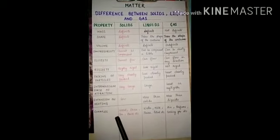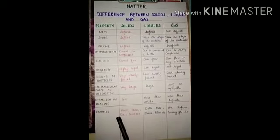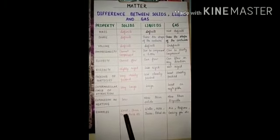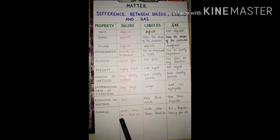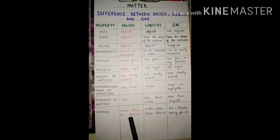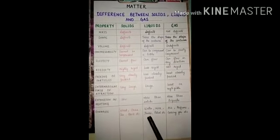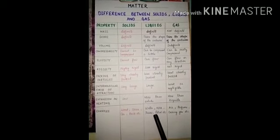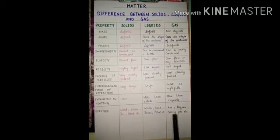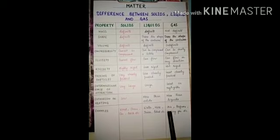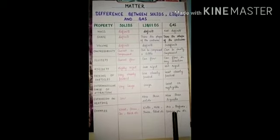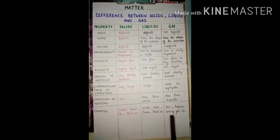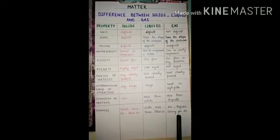Examples of solids, as we all know, are wood, chair, car, and brick. Examples of liquids are water, milk, juices, and petrol. And examples of gases are air, perfume, and the cooking gas we use at home.